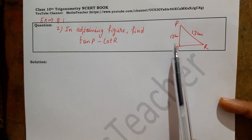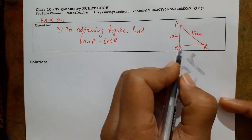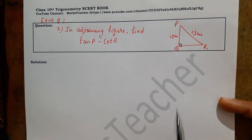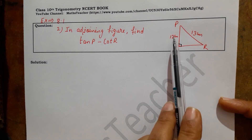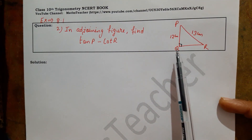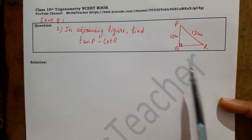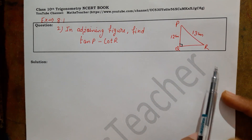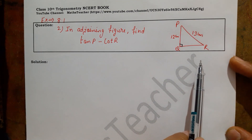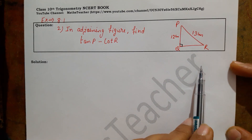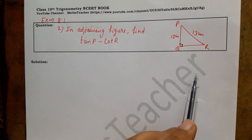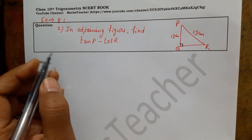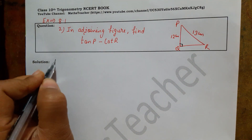We have triangle PQR where angle Q is given as 90 degrees, so this is a right angle triangle. PQ length is given, PR length is given, but QR is not given.